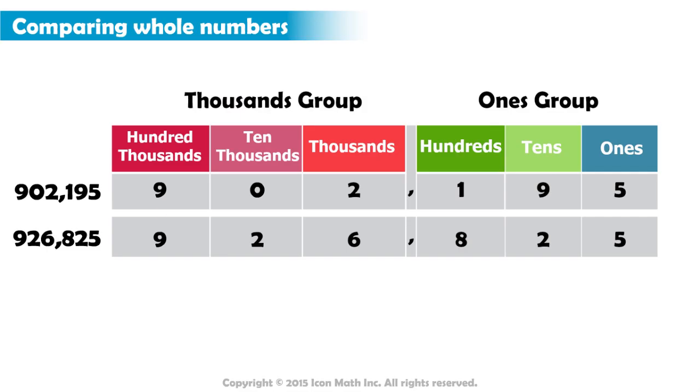We need to compare the digits in the same place value from both numbers until we find two unequal digits. We start comparing the digits on the far left because they represent the greatest value. In both numbers, the digit that is farthest to the left is in the hundred thousands place, so we start from there.